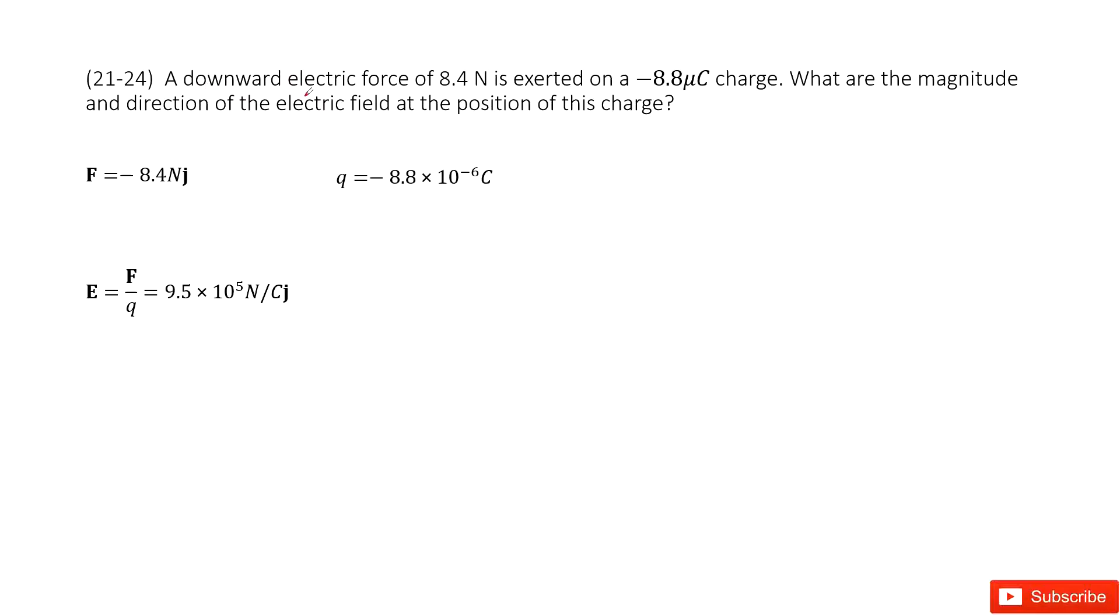We can see, it tells us the downward electric force, the magnitude and direction is downward. So we can write it there, move it down. Downward means negative y direction. So we write it as negative y, right? And the next quantity given is about the charge.